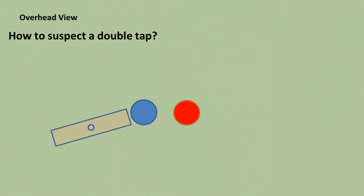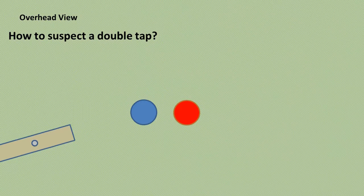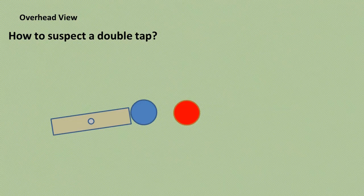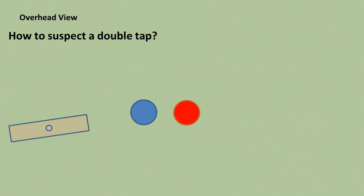So how can you suspect that a double tap has occurred? If the two balls travel apart at an angle greater than 45 degrees, then no double tap has occurred. If they travel apart at 45 degrees, then it all gets a bit questionable.